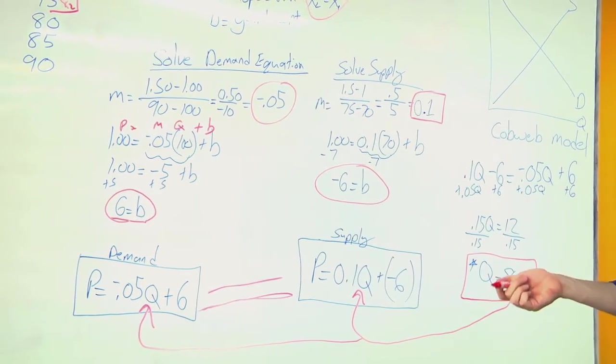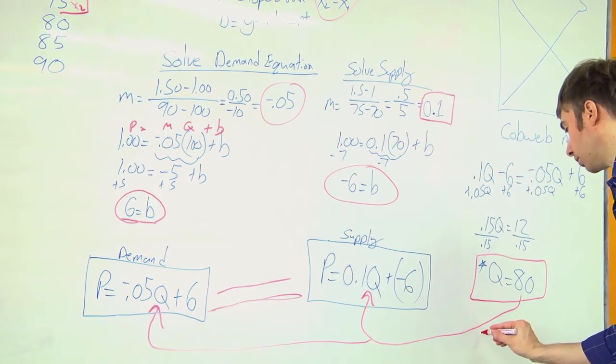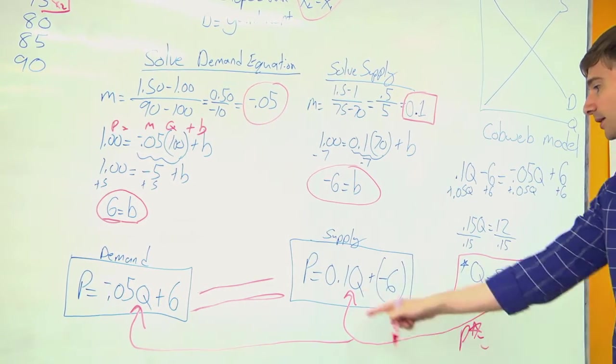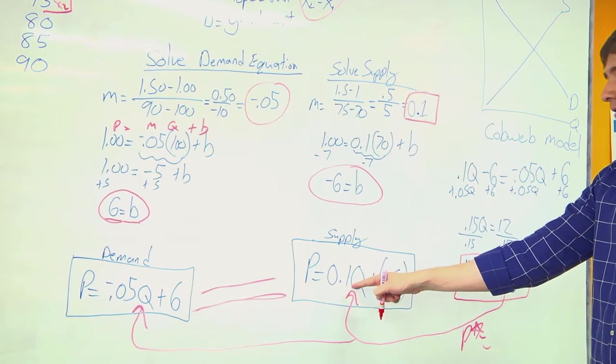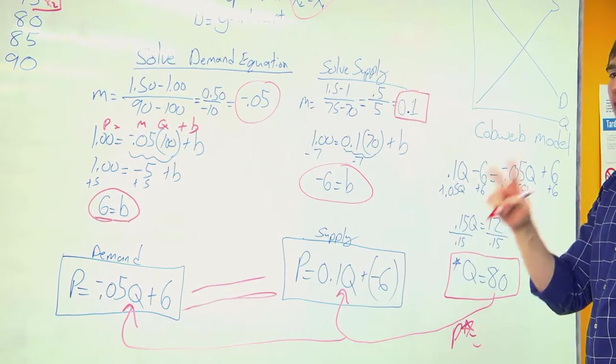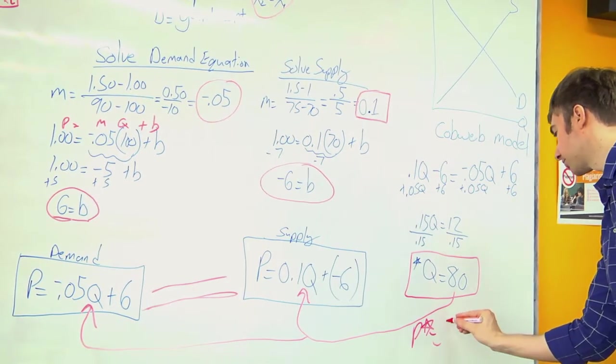And the p star will be, I'll take the 80 times 0.1, which is 8. 8 plus a negative 6, 2. So p star equals 2.